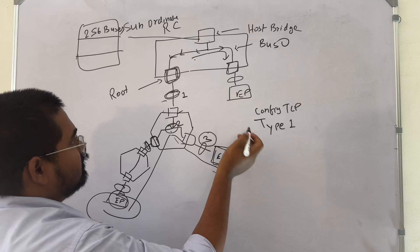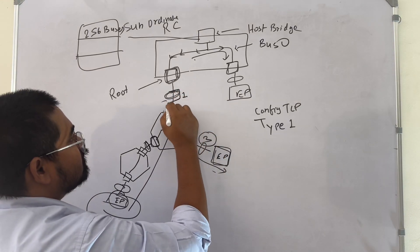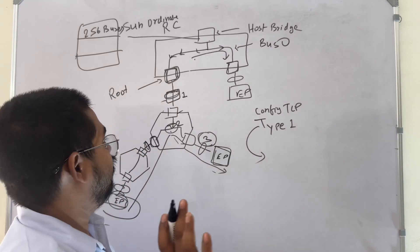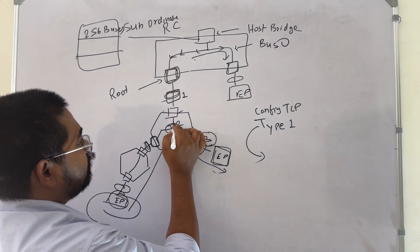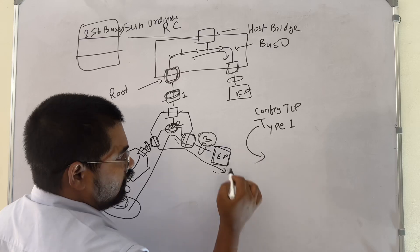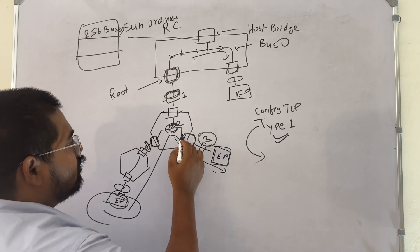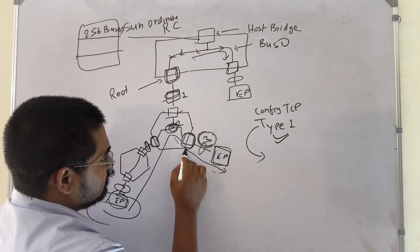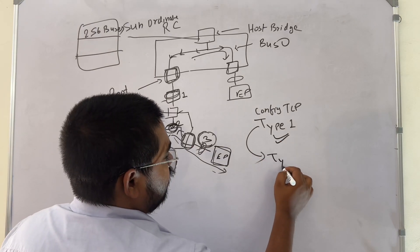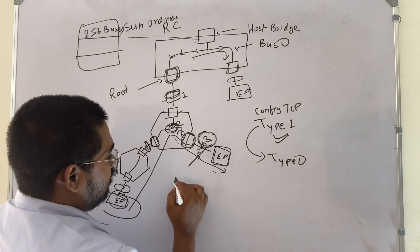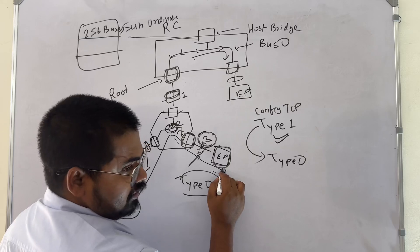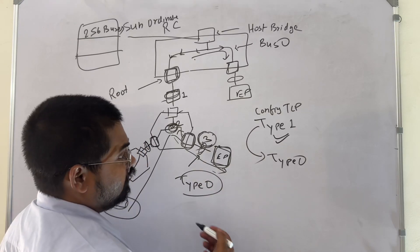Each intermediate port checks the packet and determines which bus it is destined for. It checks its secondary bus number — say it is 1 — and the target bus is 3, so it leaves the packet undisturbed and routes it forward. The config type 1 TLP passes through to bus 2. When the packet reaches the downstream port whose secondary bus is 3 — matching the target — it converts the type 1 TLP to type 0. The endpoint on bus 3 then receives the config TLP as type 0, understands it is for itself, consumes it, determines its requirements, and provides a response.